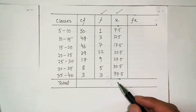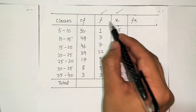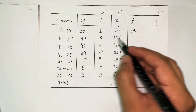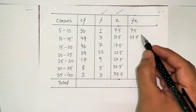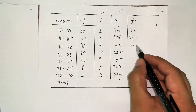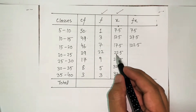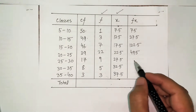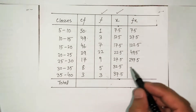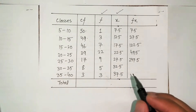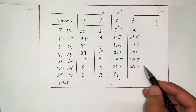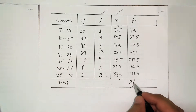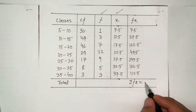Now I have f and x, so I can calculate fx (f multiplied by x). First: 1 × 7.5 = 7.5; second: 3 × 12.5 = 37.5; then 7 × 17.5 = 122.5; then 22 × 22.5 = 495; then 9 × 27.5 = 247.5; then 5 × 32.5 = 162.5; and finally 3 × 37.5 = 112.5.